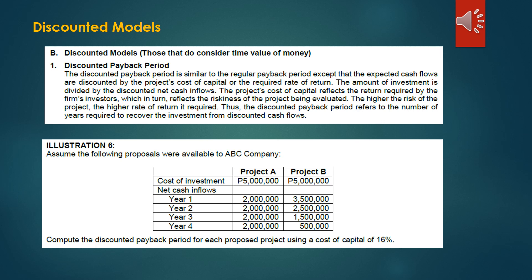Let us now proceed to the discounted model. Previously, we did not use time value of money in solving results. Now, in this section, we are going to consider the time value of money. First, we have the discounted payback method. The discounted payback period is similar to the regular payback period, except that the expected cash flows are discounted by the project's cost of capital or required rate of return. The higher the risk of the project, the higher the rate of return required. Thus, the discounted payback period refers to the number of years required to recover the investment from discounted cash flows.